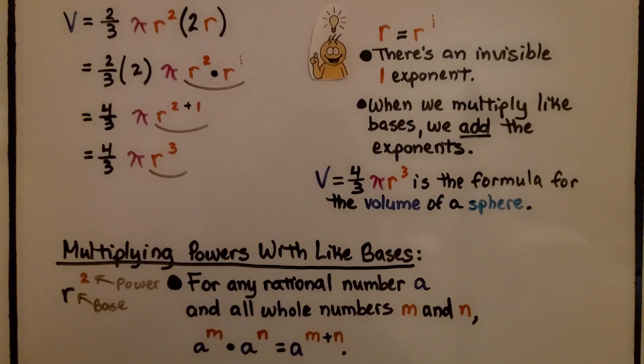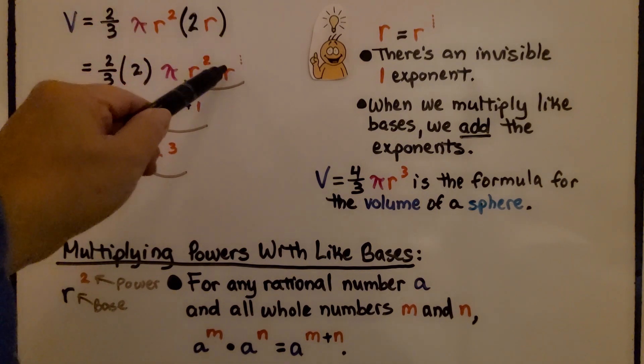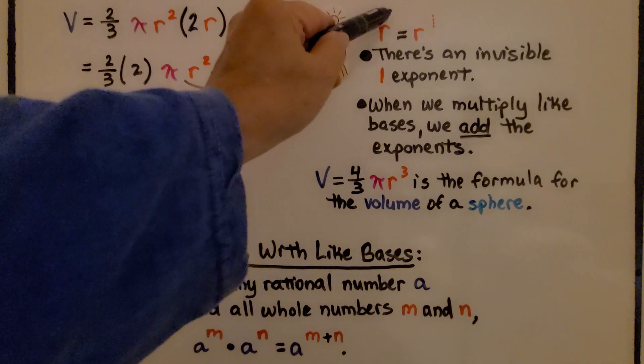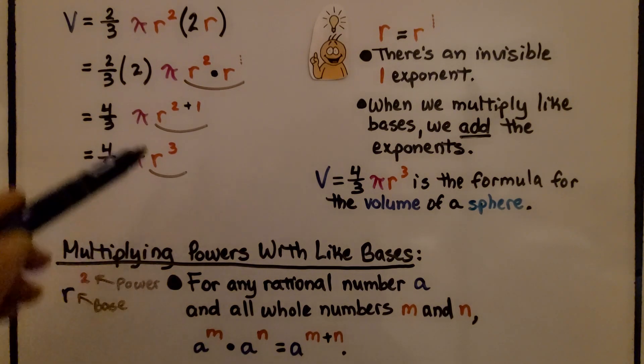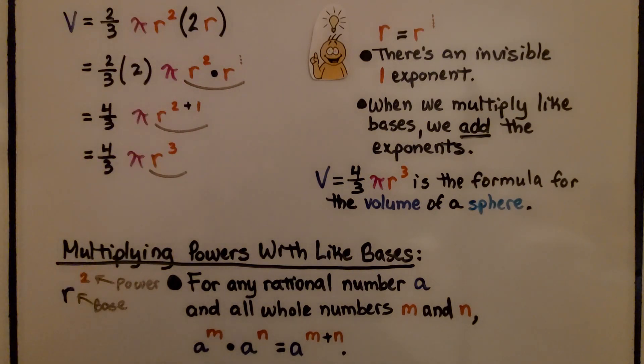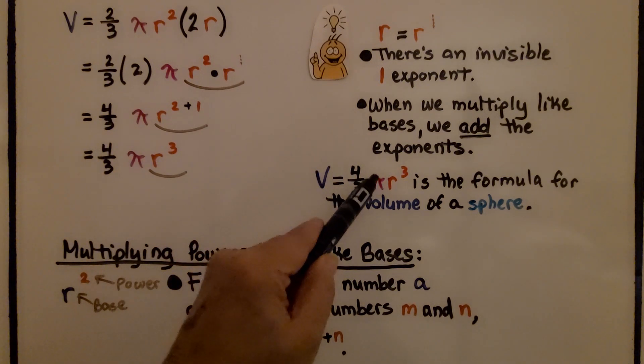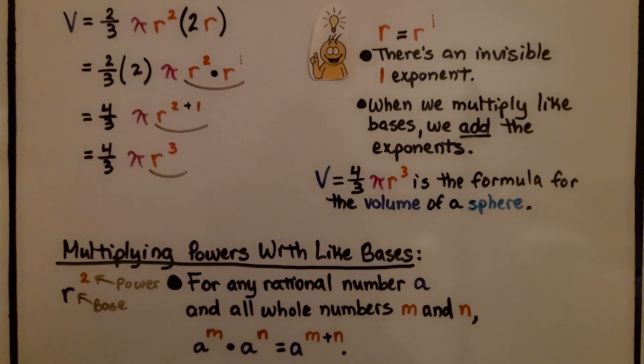Now how did I do that? We multiplied 2 times 2/3, which got us 4/3. And then we multiplied the r² times this r. When you see r with no exponent, it's really r to the first power. There's an invisible one exponent. When we multiply like bases, we add the exponents. That means we have r to the second power plus one. We have 4/3 πr to the third power. Volume equals 4/3 πr cubed, or to the third power. Either way, it's the same thing, is the formula for the volume of a sphere.